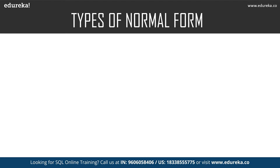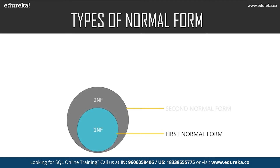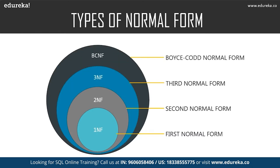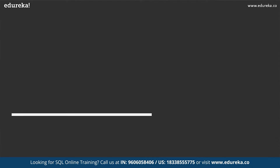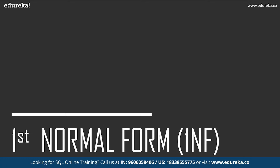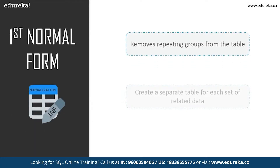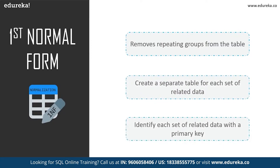There are many normal forms still under development, but let's focus on the basic and essential ones: first normal form, second normal form, third normal form, and Boyce-Codd normal form. In first normal form, we tackle the problem of atomicity. Atomicity means values in the table should not be further divided — a single cell cannot hold multiple values. If a table contains composite or multi-valued attributes, it violates the first normal form.